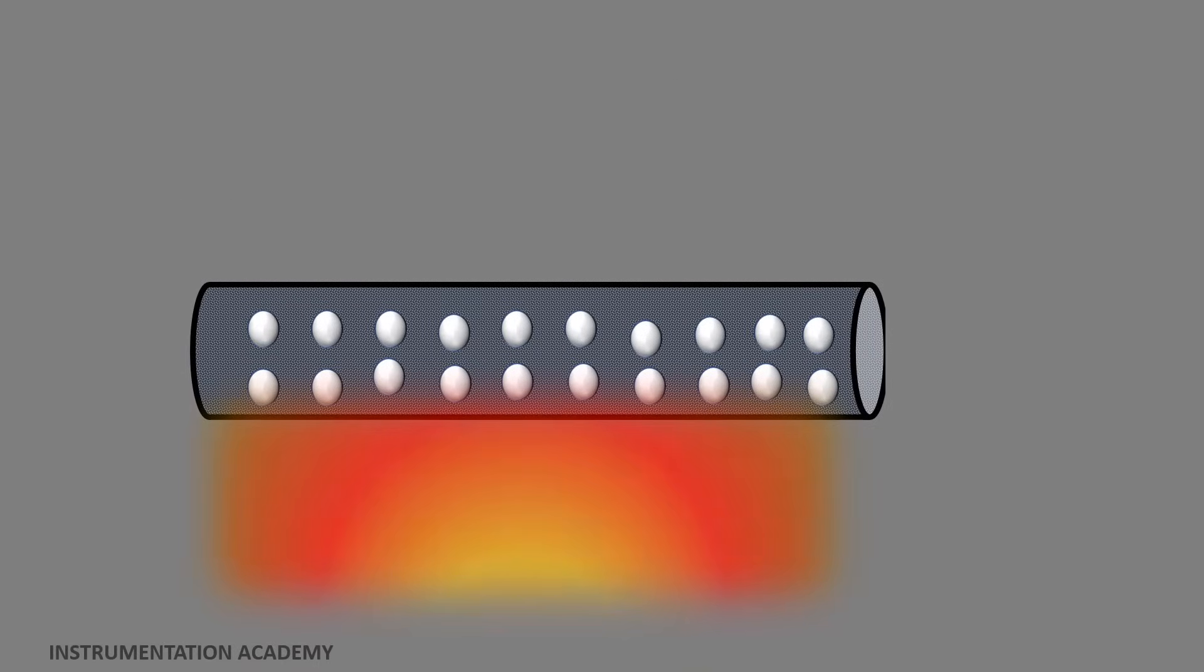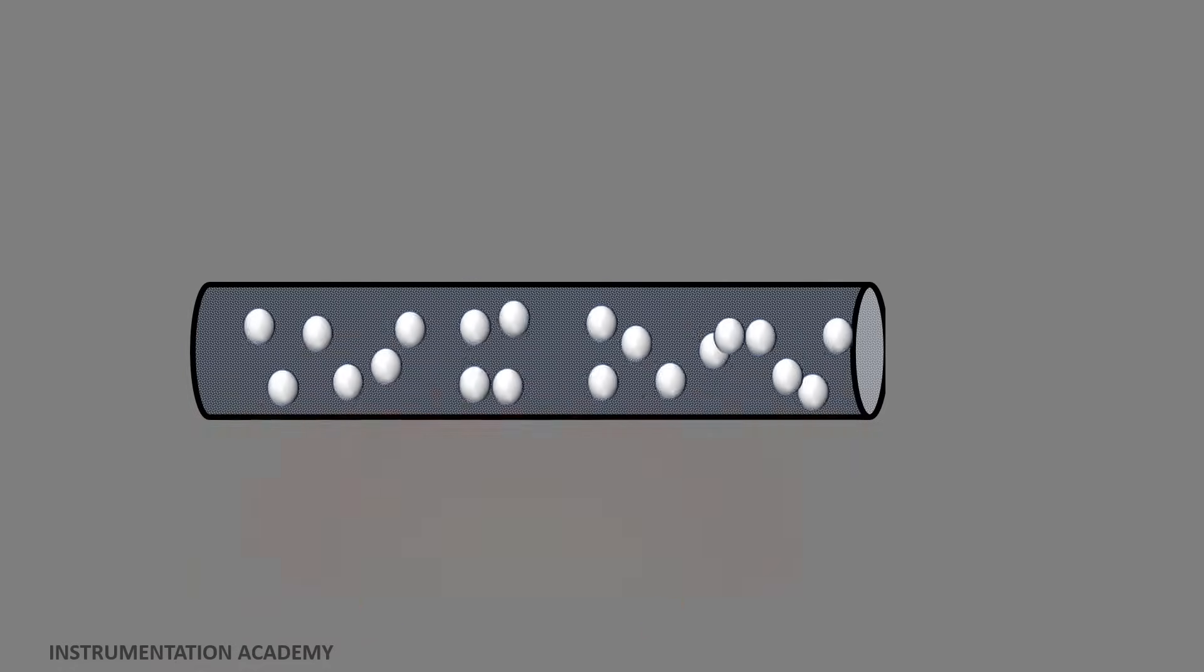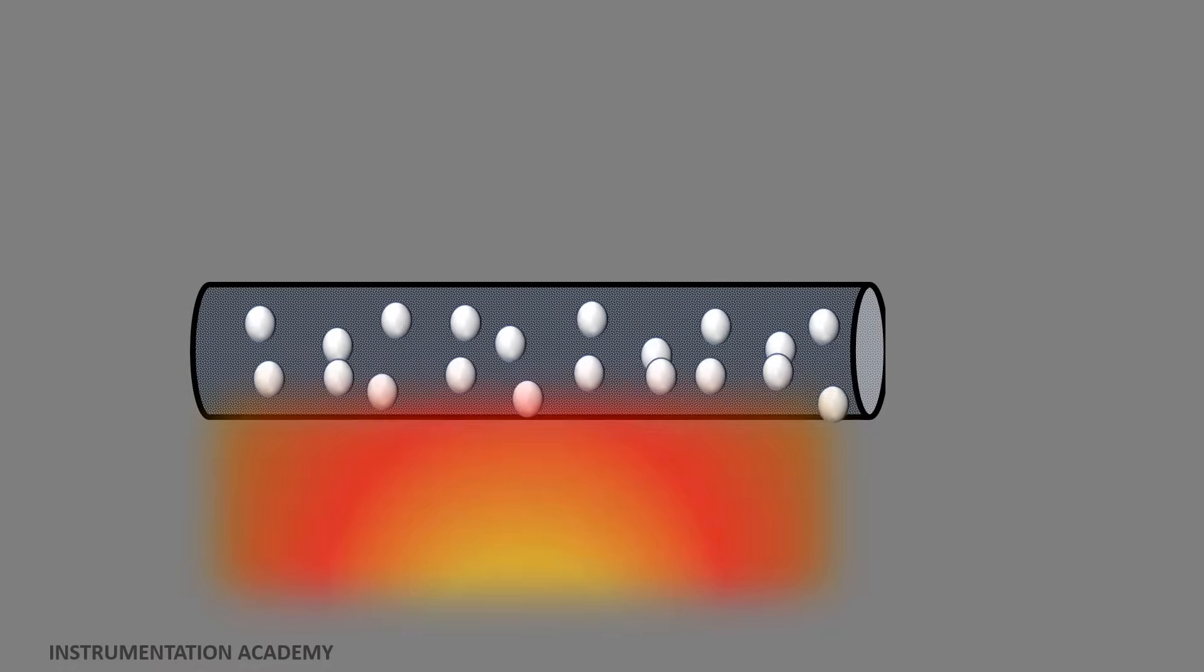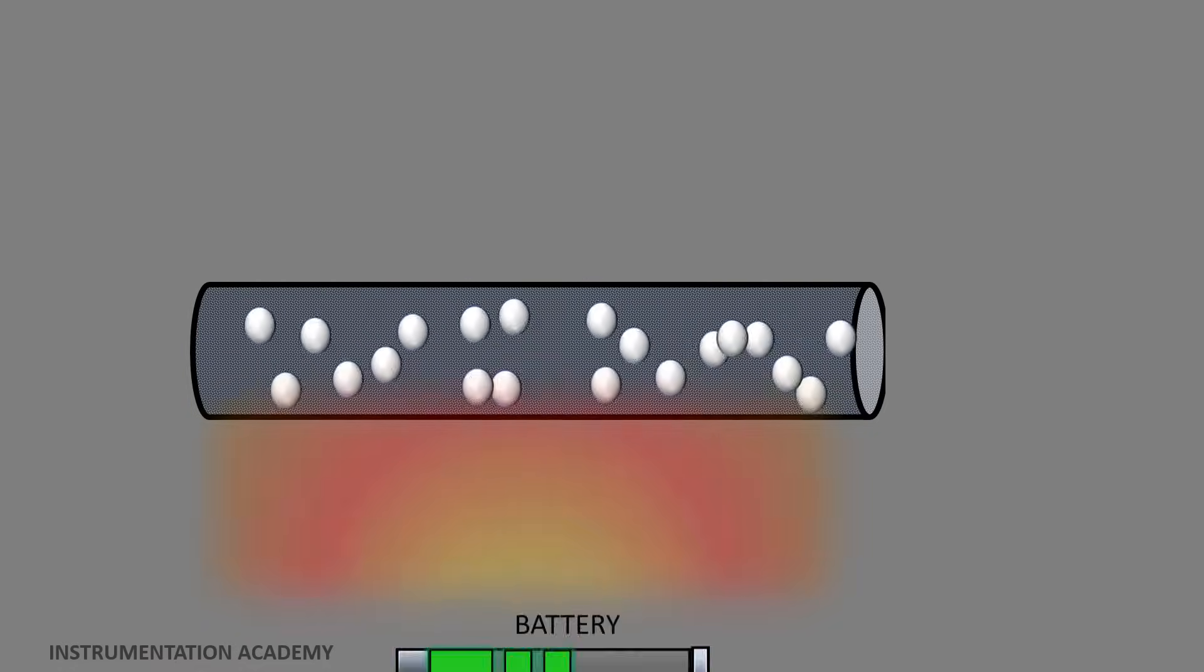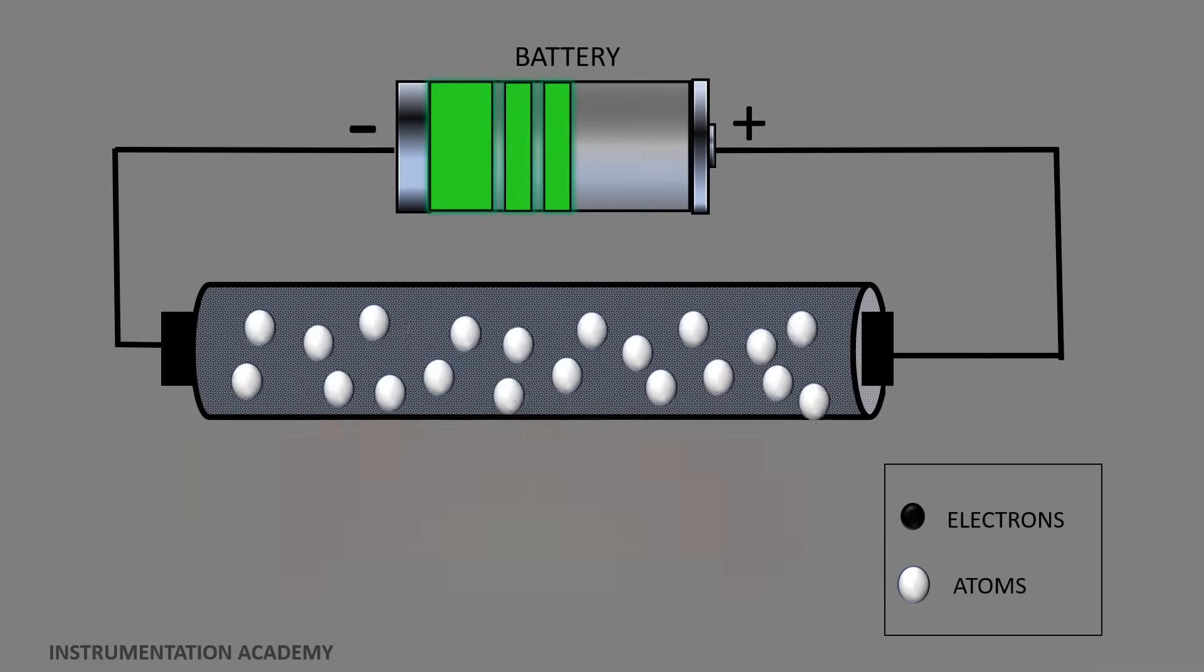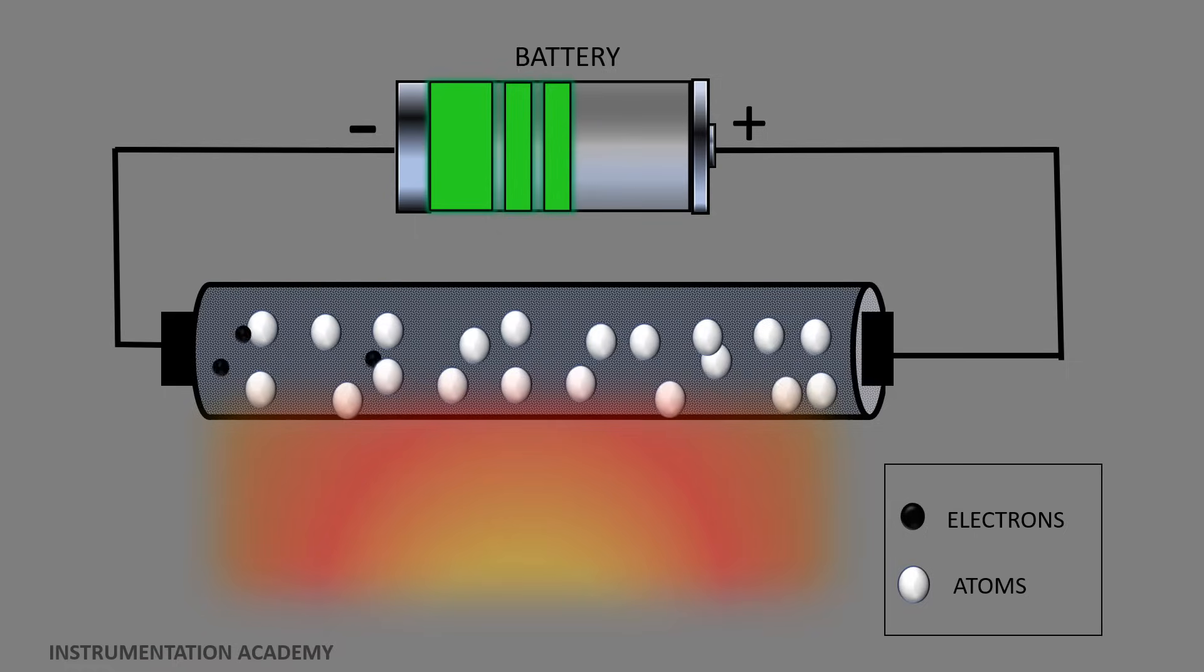Now when we heat the conductor, the atoms of the conductor absorb heat energy. As a result their vibration increases. Because of this increase in vibration, the collision of electrons with atoms also increases. And so it becomes very difficult for electrons to move across the conductor and hence the resulting output current decreases.